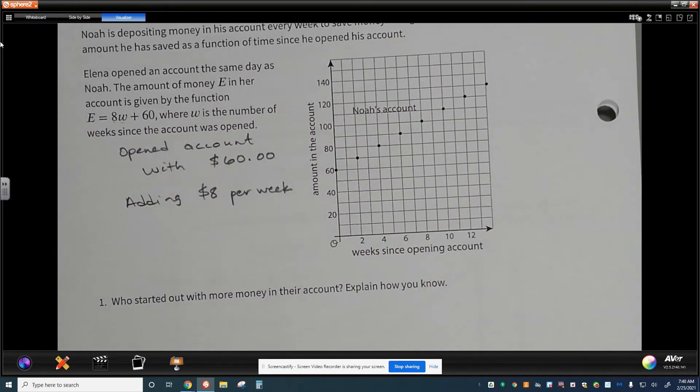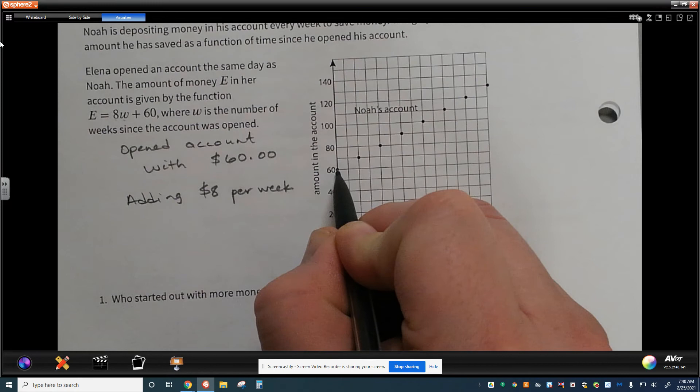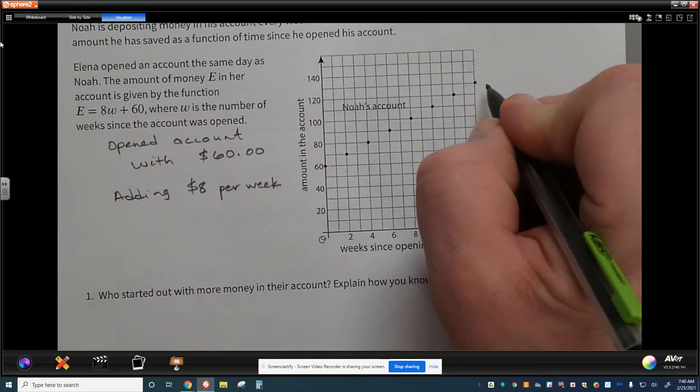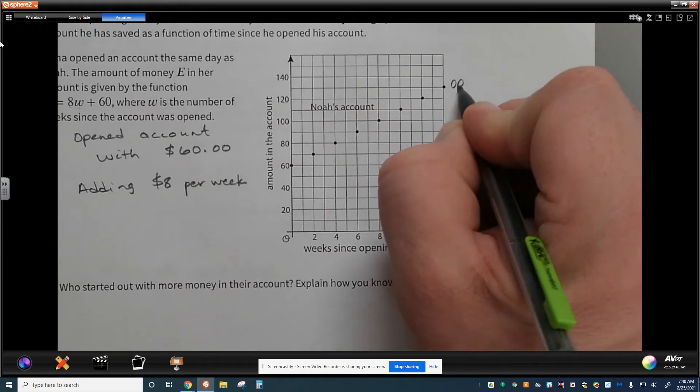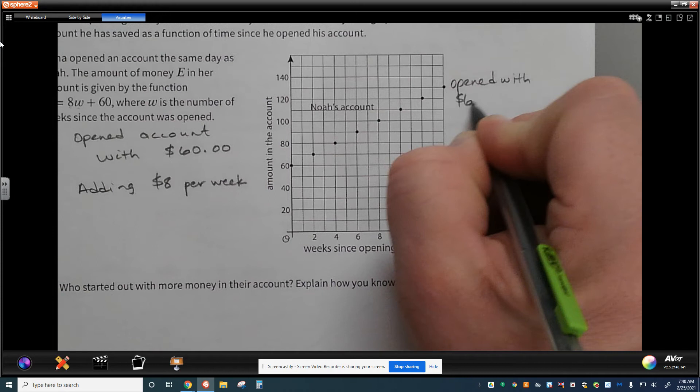Let's talk about Noah. We see that Noah, in his data, the very first point right here is 0, 60. So this tells us that Noah opened with 60 as well. So $60 here.